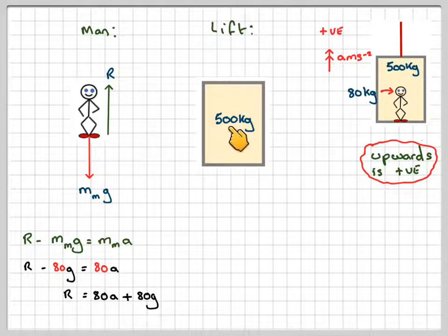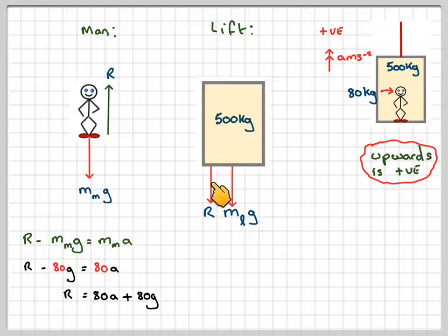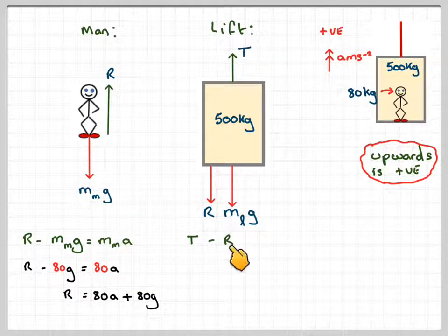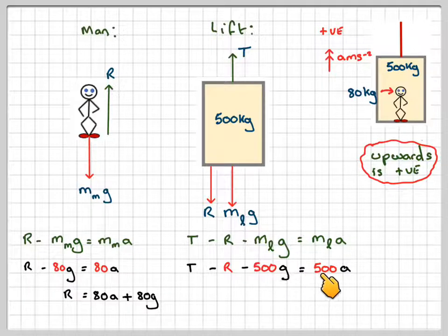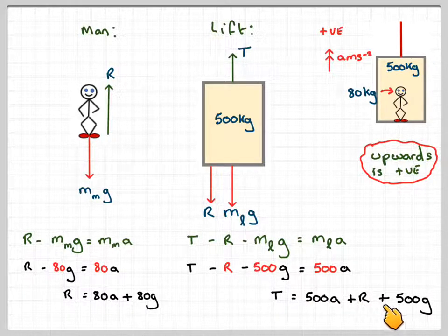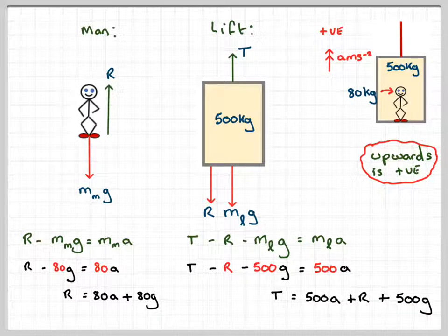For the lift of 500 kilograms, we have the weight of the lift m_l times g acting downwards, the reaction R of the man standing on the lift acting downwards on the lift, and the tension T in the cable acting upwards. The equation of motion gives T minus R minus m_l times g equals m_l times a, so T minus R minus 500g equals 500a. Rearranging: T equals 500a plus R plus 500g.